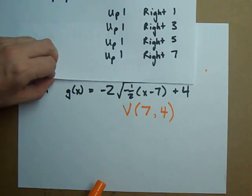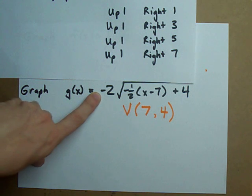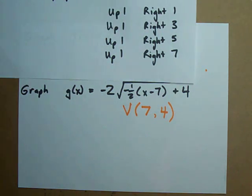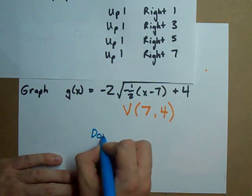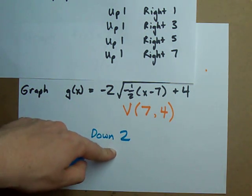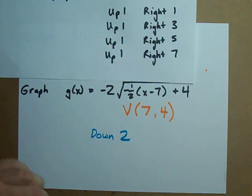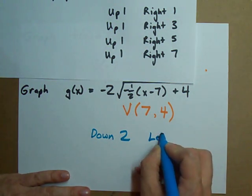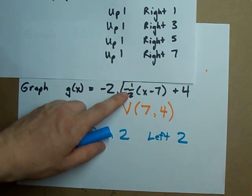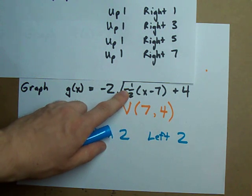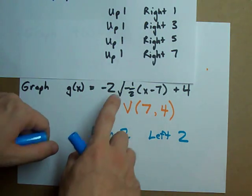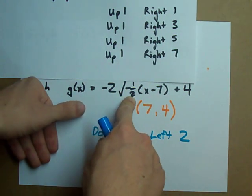So flipped vertically and stretched by two vertically. Instead of going up one each time we're going to be going down two. See how the minus two means down two each time. And instead of right one we're going to be going left two. Left because we've flipped ourselves horizontally. There's a negative out front here.